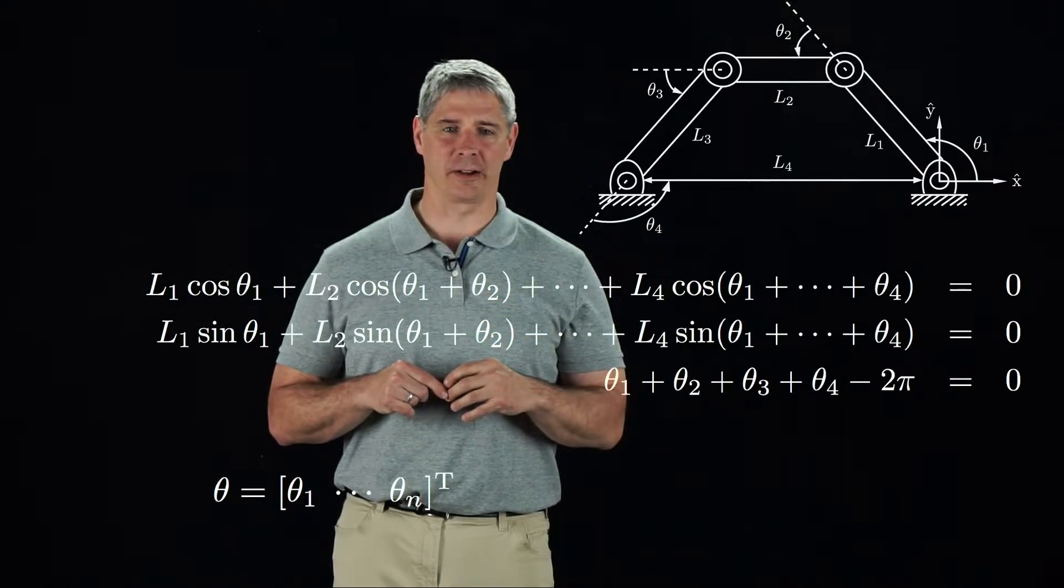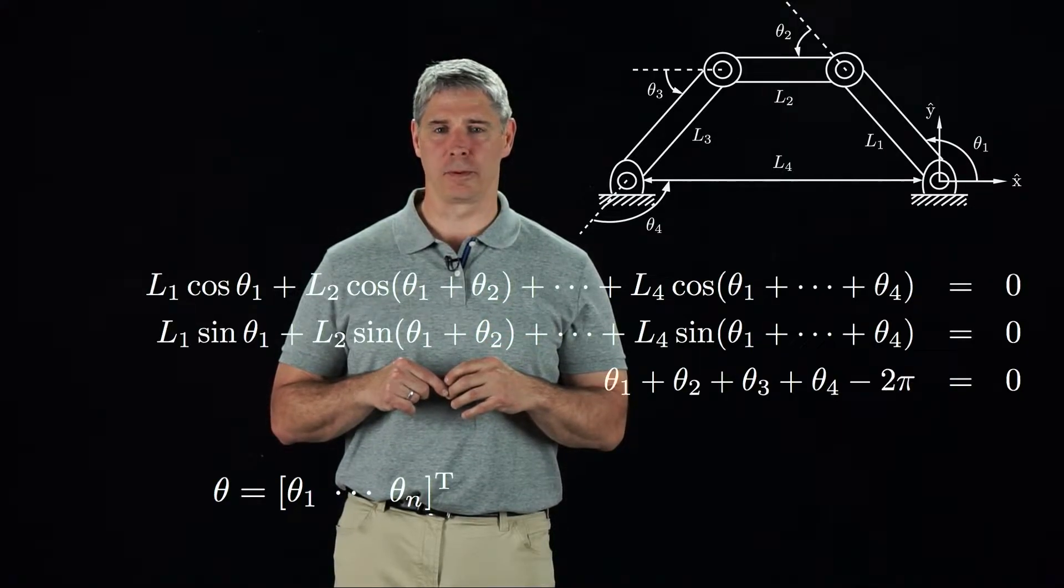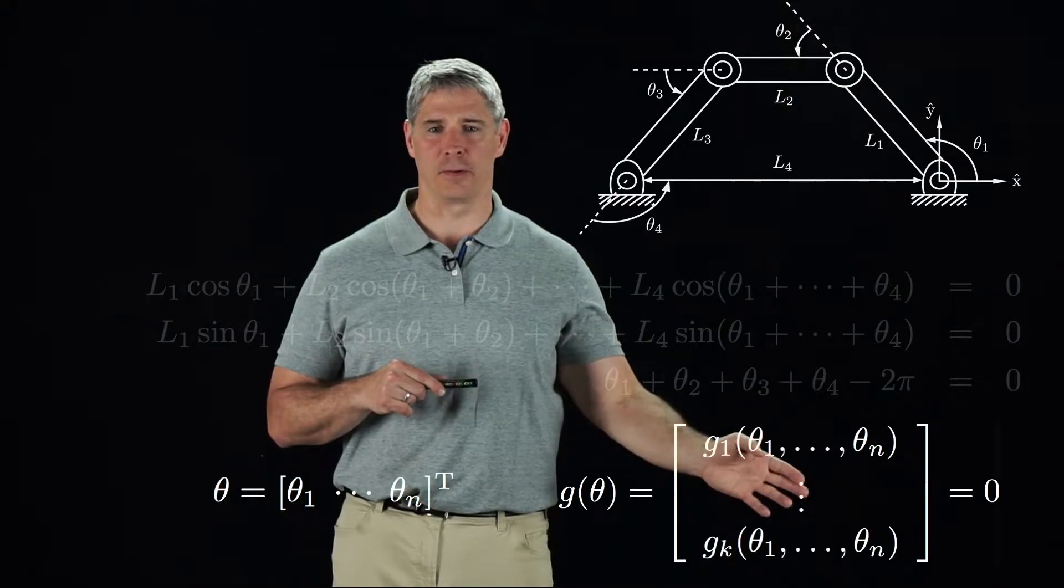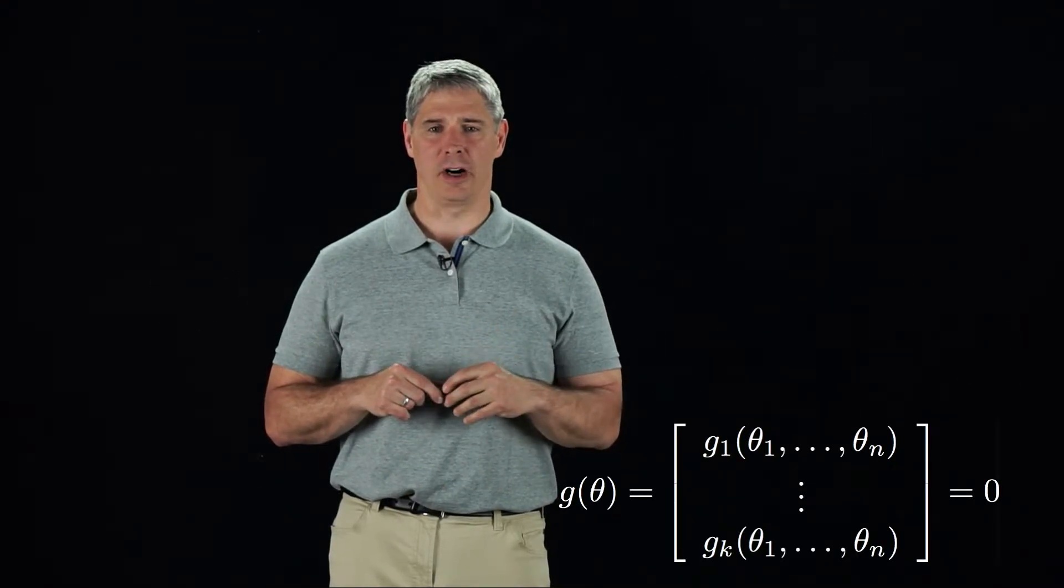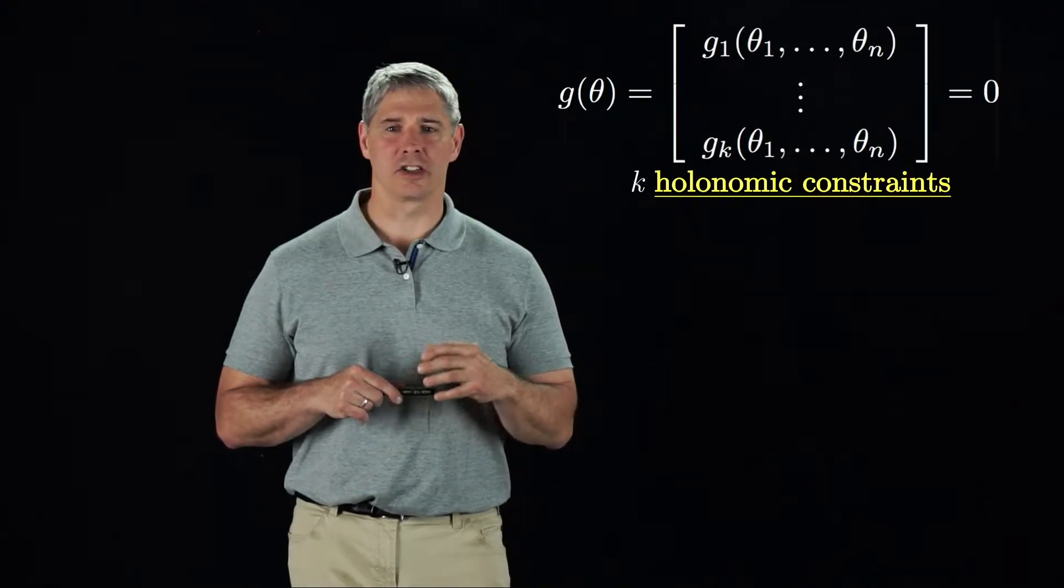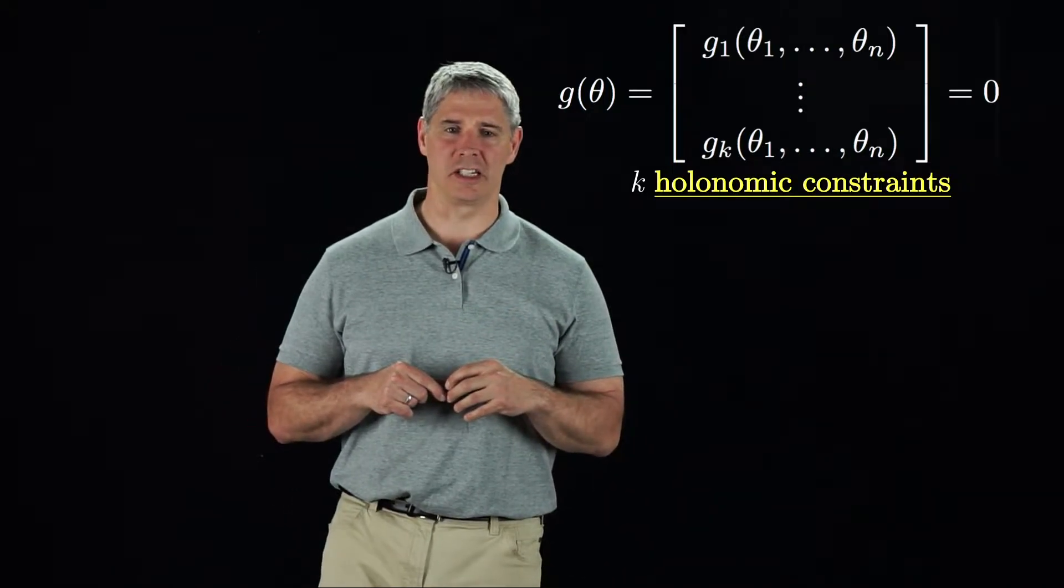If we define the vector of joint angles theta, we can rewrite the loop-closure equations in this vector form. These constraints are called holonomic constraints, constraints that reduce the dimension of the C space.